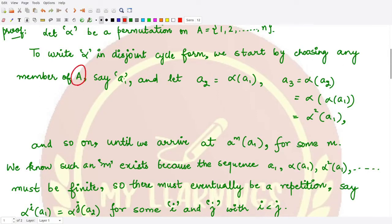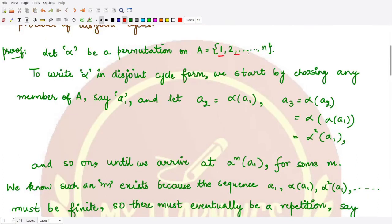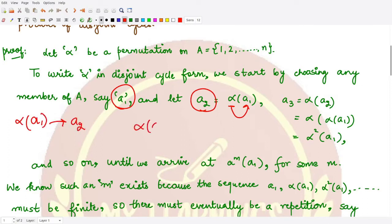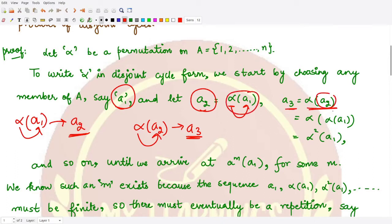In order to write alpha in disjoint cycle form, we start by taking any member from the given set A. Suppose we take the number a1. Then a2 would be alpha of a1 — when you apply alpha to a1 you get a2. Again when you apply alpha onto a2 you get a3, and a3 can be written as alpha squared of a1.